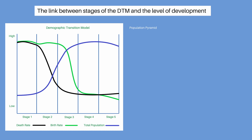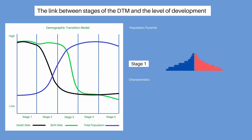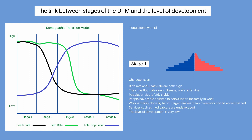Population pyramids show the structure of populations. The population is categorised by gender and age groups called cohorts. When we look at a population pyramid for stage 1, we see it has a wide base, reflecting that a high proportion of the people in the population are young. Unfortunately, people do not live so long because support services such as medical care are undeveloped. The pyramid has concave sides and is short because few people are living to older ages.